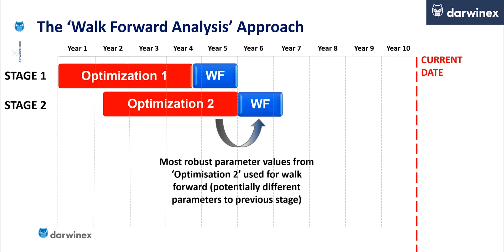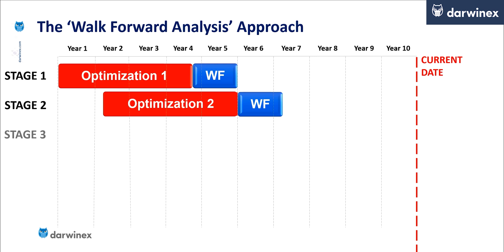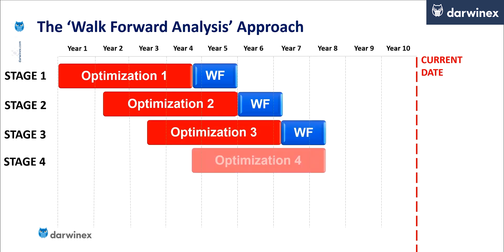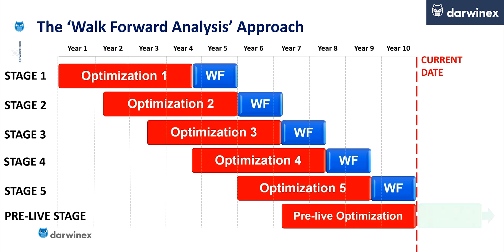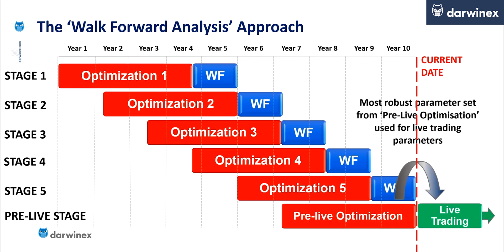And this is the whole point of walk-forward analysis — that it produces the parameter values that are working best at that particular time, based on what the market conditions are right then. And this then continues with the additional stages until the optimization is complete. Now, if on investigation of the cumulative walk-forward results they meet your expectations, you can then run a final optimization, which I call a pre-live optimization. And it's this that you pass the parameters forward into live trading.